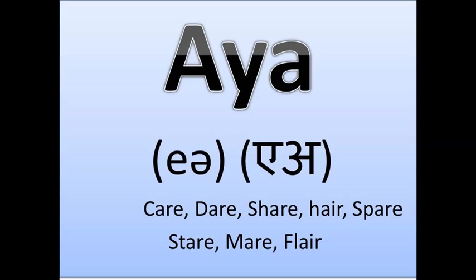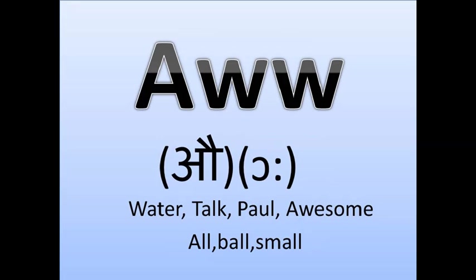The next sound is the /eər/ sound. Some words contain this sound — like 'care.' We don't say 'ker' or 'car,' we say 'care.' Other examples include: dear, share, hair, spare, stare, mare, and flare. There are many words that can be pronounced with this sound, and that is how their pronunciation works.